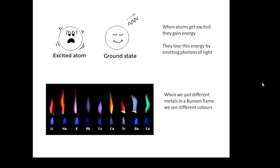If you put copper in a Bunsen flame, you see green. If you put sodium in a Bunsen flame, you see yellow, etc. Different elements emit different colours, different wavelengths of light.